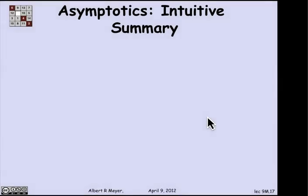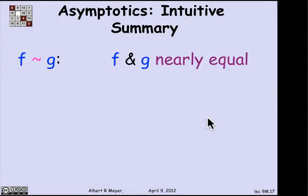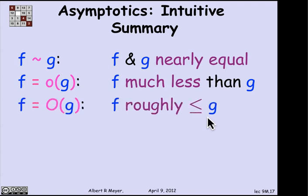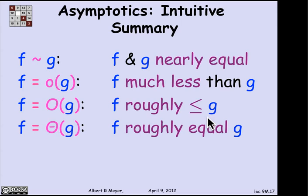So to summarize, there are these four relations. f asymptotically equal to g means that f and g are nearly equal. f equals little o of g informally means that f is much less than g. f equals O of g means that f is roughly less than or equal to g, where roughly means we're not concerned about constant factors. And f equals theta of g means that f is roughly equal to g. We'll examine these properties in more detail in the next segment.